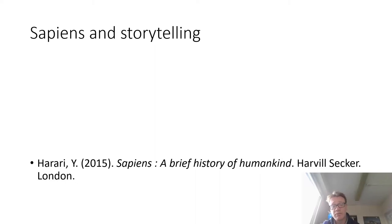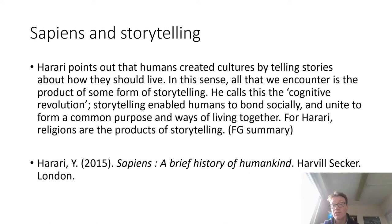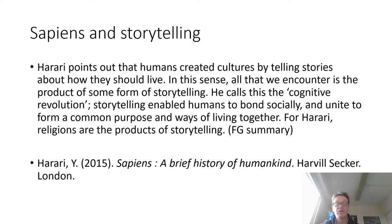Sapiens is an interesting book — a brief history of mankind. In it, Harari points out that all humans have created cultures through stories, seeing storytelling as absolutely central to the story of being a human being. It enables humans to bond socially and to unite to form a common purpose and ways of living together. For Harari, religions are the products of storytelling. He has a very good section about money — money is part of a kind of narrative of modern day life, though it is a fictional invention when you look at it closely.